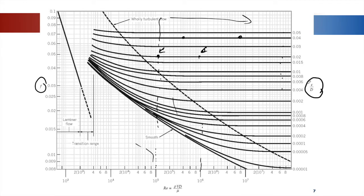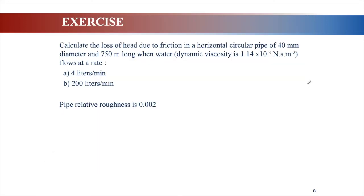In this video we are not including minor losses — we are calculating major losses for a straight long pipe. The exercise: calculate the head loss due to friction in a horizontal circular pipe of 40 mm diameter and 750 meters long, when water with dynamic viscosity 1.14 times 10 to the power of minus 3 N·s/m² flows at (A) 4 liters per minute and (B) 200 liters per minute. Given relative roughness epsilon over D equals 0.002.